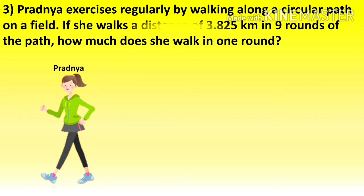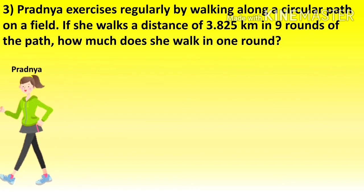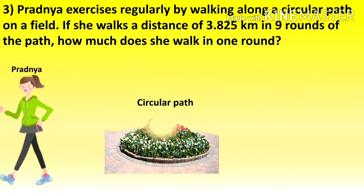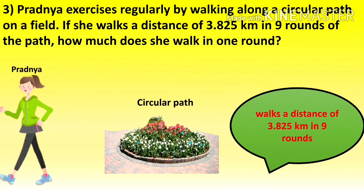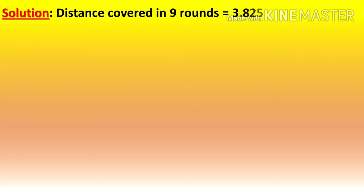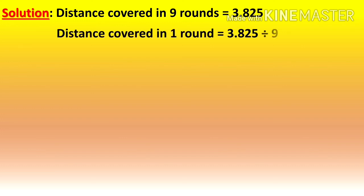Now, Pratanya exercises regularly by walking along a circular path on a field. If she walks a distance of 3.825 km in 9 rounds of the path, how much does she walk in 1 round? Pratanya walks in a circular path. In 9 rounds she covered 3.825 km. Distance covered in 1 round is 3.825 divided by 9.